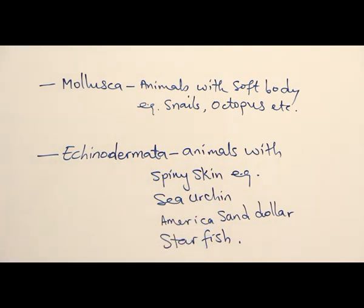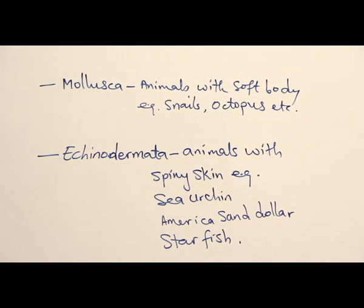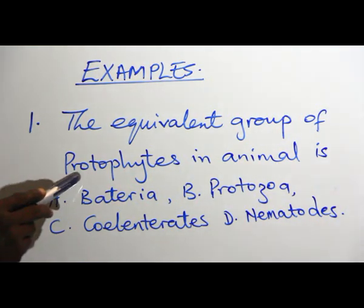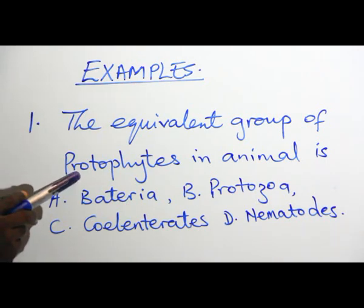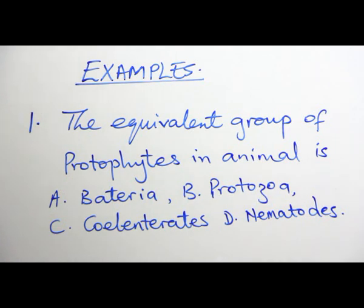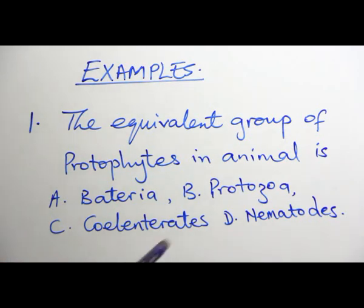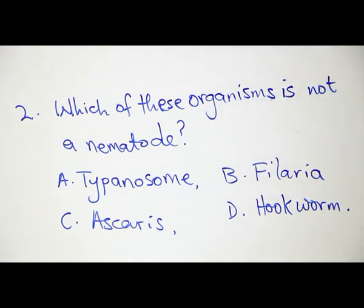Now we are going to look at questions based on classification of invertebrates, bringing out the major features of each group. Question 1: The equivalent group of protophytes in animals is — A. bacteria, B. protozoa, C. coelenterates, D. nematodes. Among the protists we have protophytes and protozoa, so the equivalent of protophytes is the protozoa. Answer to question 1 is option B: protozoa.